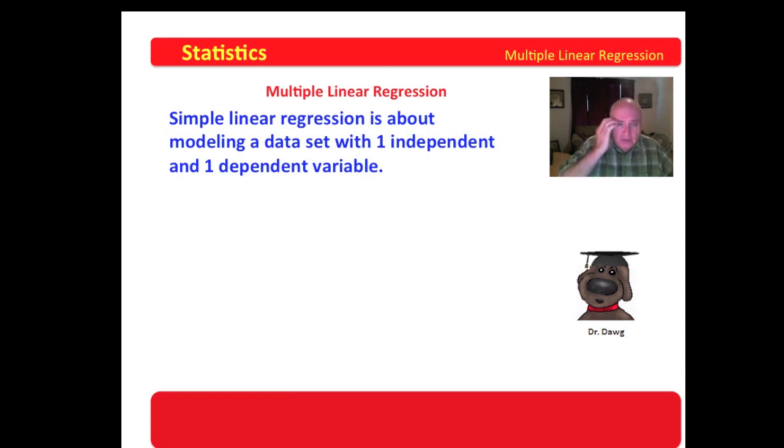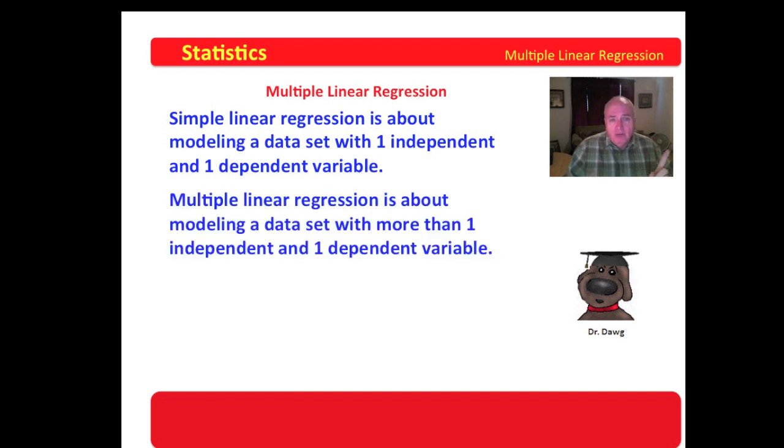As we start this thing out, we just finished simple linear regression. Simple linear regression is about modeling a data set with one independent variable to model one dependent variable. Multiple linear regression is about modeling a data set with more than one independent variable to model one dependent variable.